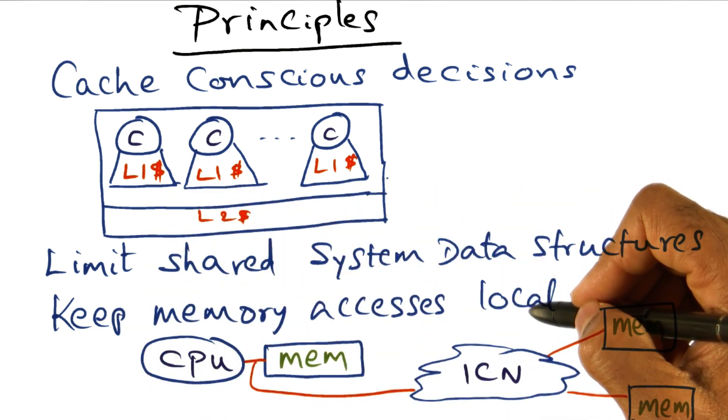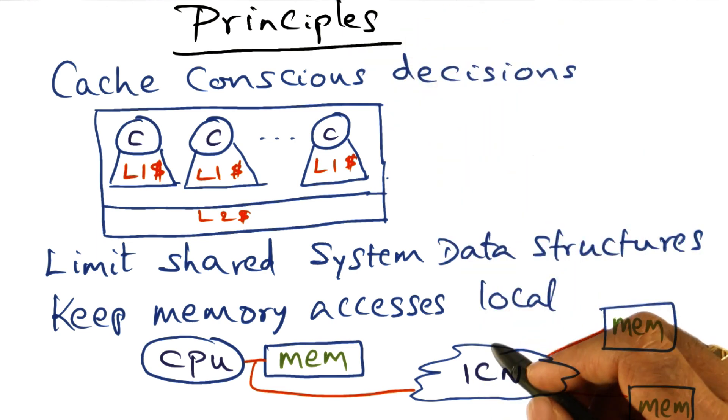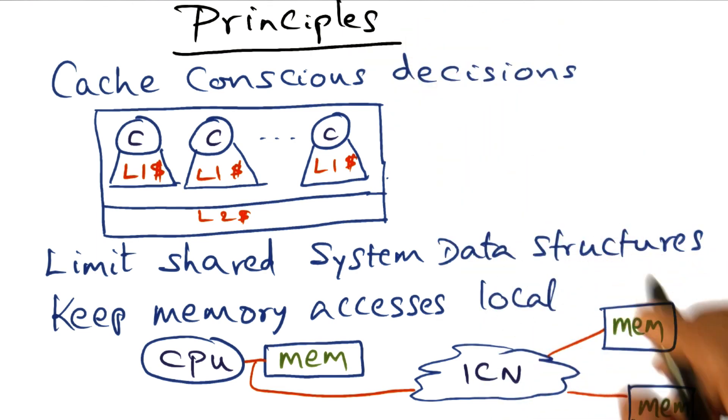So keeping memory access local is another important principle that you want to adhere to in designing operating systems for multiprocessors.